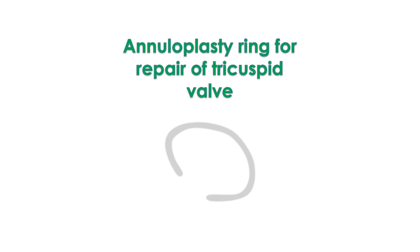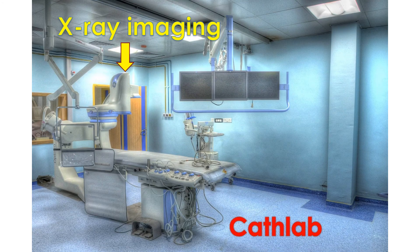A tricuspid valve with a severe leak may be repaired during open heart surgery for the often associated disease of the valves on the left side, like mitral valve disease. A ring is placed at the base of the valve and a stitch is placed to reduce the size of the valve and reduce the leak — a procedure known as tricuspid annuloplasty. Recently, procedures for rectifying the leak using devices introduced through small holes in the groin with guidance of X-ray imaging have also come into use.